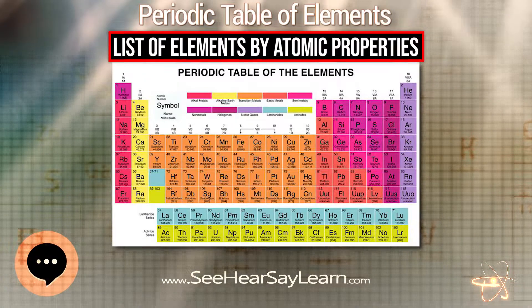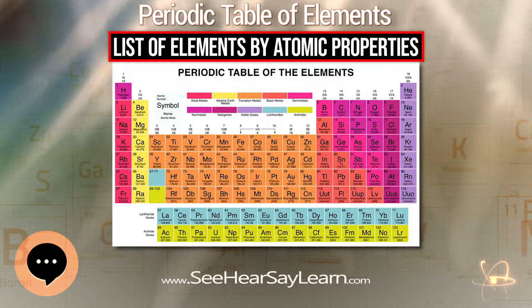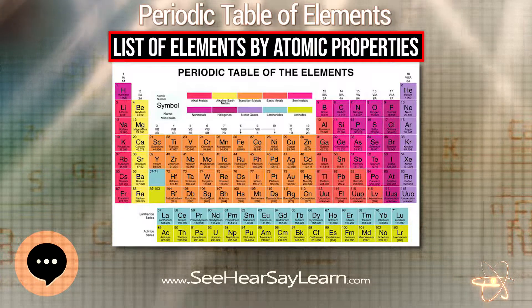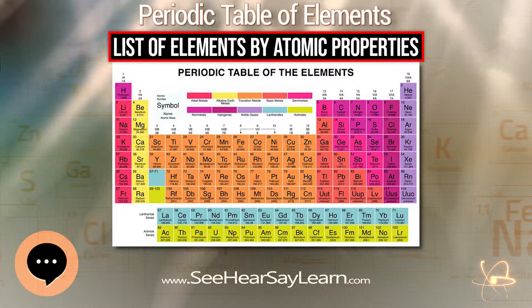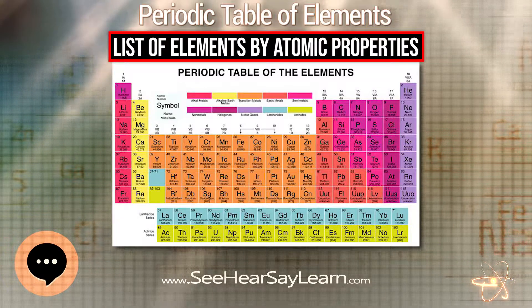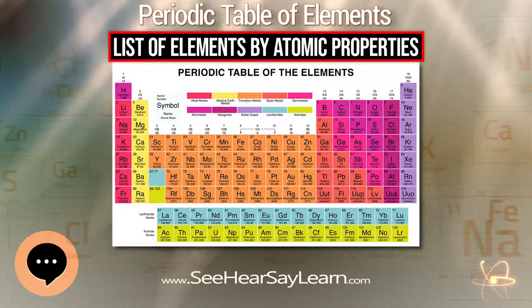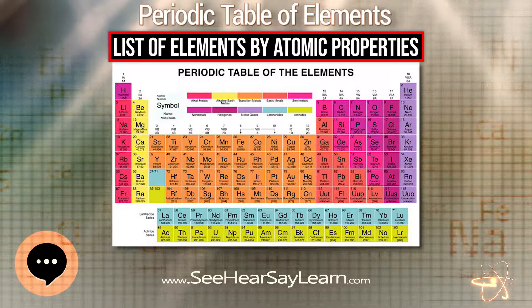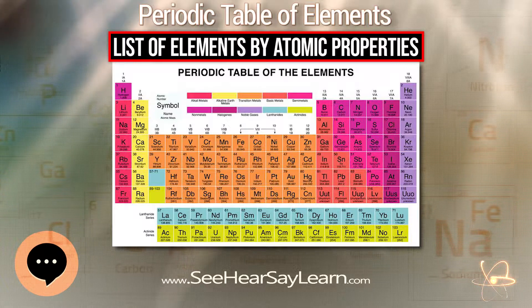This is a list of chemical elements and their atomic properties, ordered by atomic number.